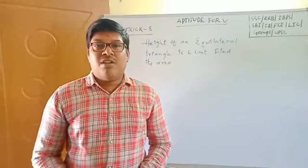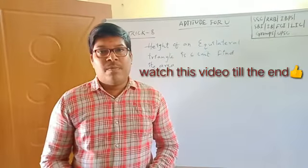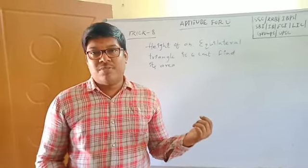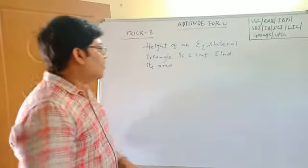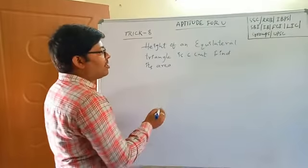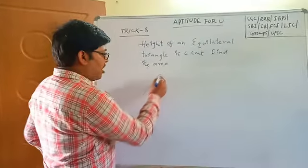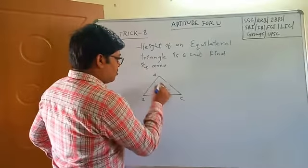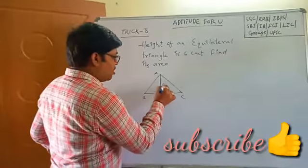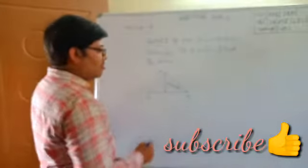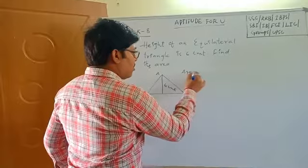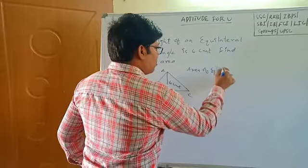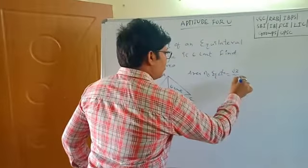We will talk about the short trick. The height of an equilateral triangle is 6 cm. The equilateral triangle is ABC. The area of an equilateral triangle is equal to root 3 by 4 times side square.